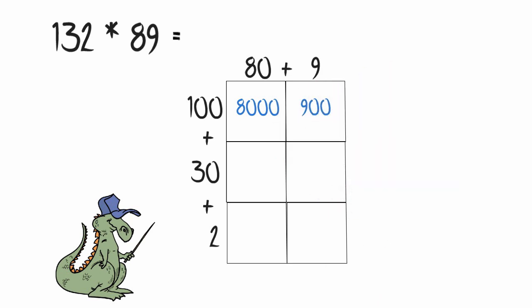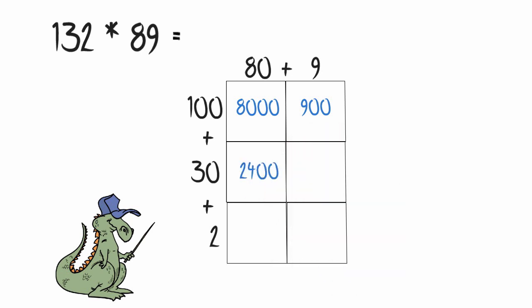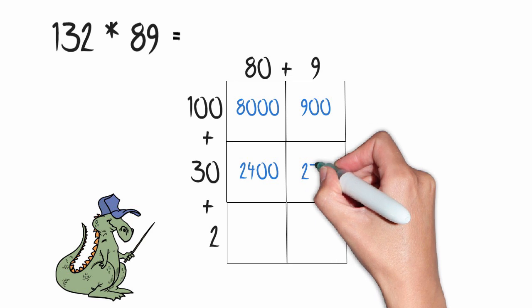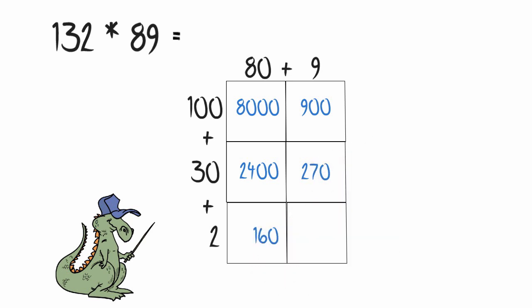30 times 80 is 2400. 30 times 9 is 270. 2 times 80 is 160. And 2 times 9 is 18.